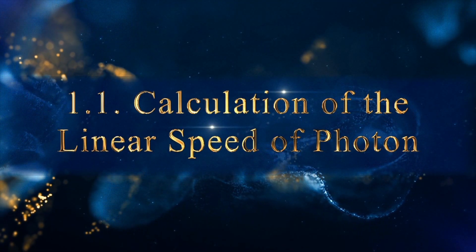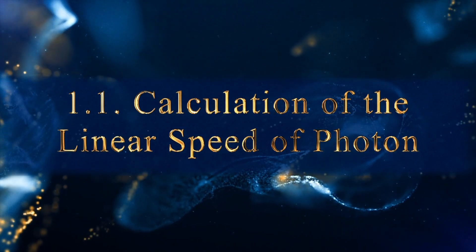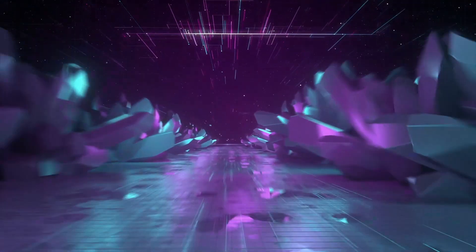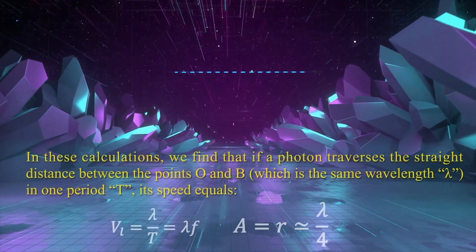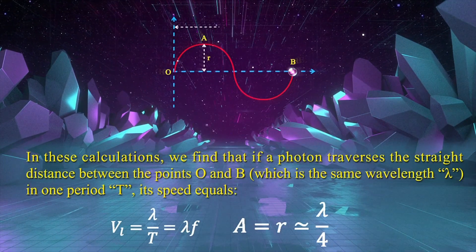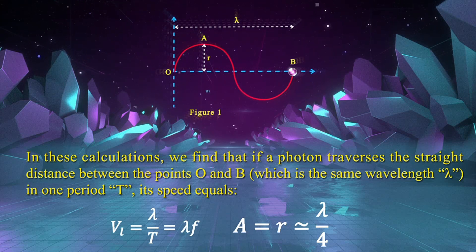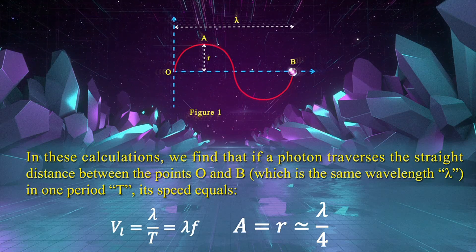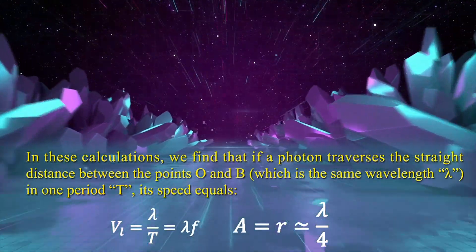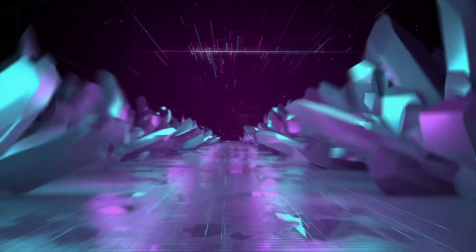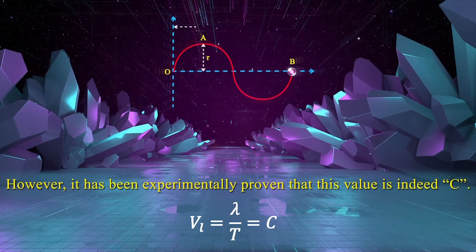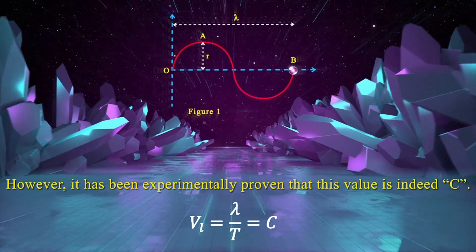Calculation of the linear speed of photon. In these calculations, we find that if a photon traverses the straight distance between points O and B — which is the same as wavelength lambda — in one period t, its speed equals lambda over t. It has been experimentally proven that this value is indeed C.